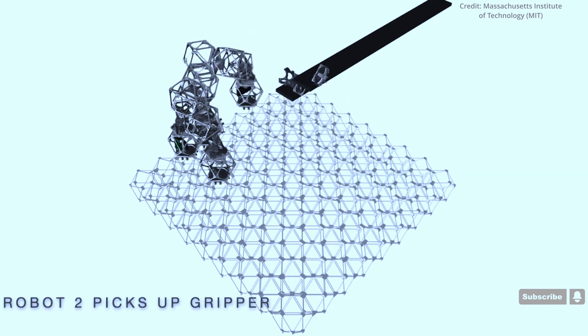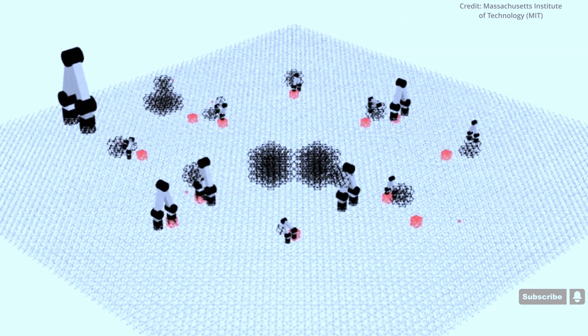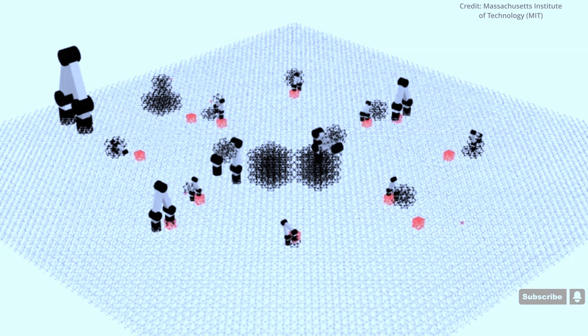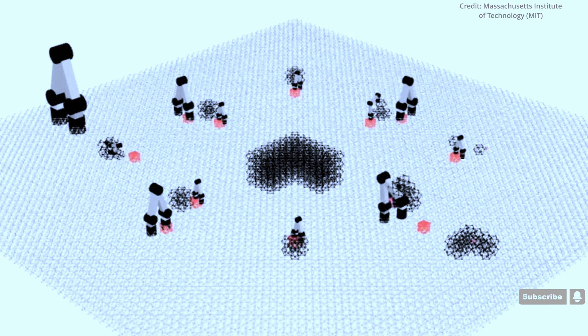Once the size of the structure being built reaches a certain point in relation to the size of the assembler robot, the bots can determine that it's time to construct a larger version of themselves that can travel farther and do so with less effort, thanks to this new technology.